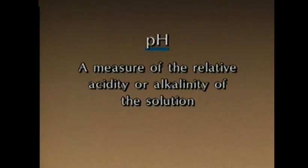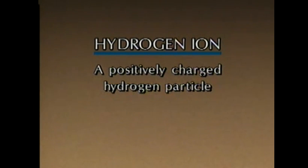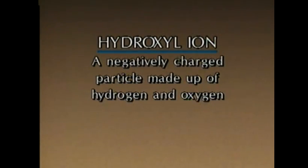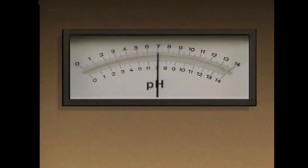Some solutions are characterized by their pH measurements. A solution's pH is a measure of the relative acidity or alkalinity of the solution. The terms acidity and alkalinity refer to the relative amounts of hydrogen ions and hydroxyl ions dissolved in a liquid. A hydrogen ion is a positively charged hydrogen particle. A pH scale like this one is typically used to measure a solution's pH. When the relative amounts of hydrogen ions and hydroxyl ions in a solution are equal, the solution is neutral. A neutral solution has a pH of 7. From 7, the numbers on a pH scale go up to indicate increasing degrees of alkalinity and down to indicate increasing degrees of acidity.